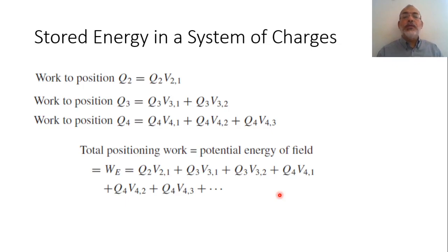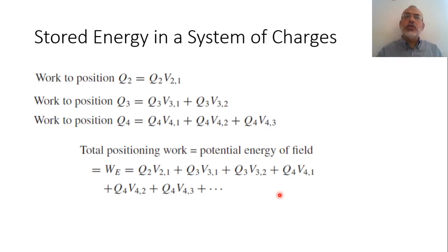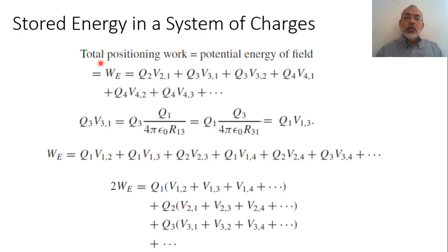The question now is: what will be the situation if we reverse the arrangement? If I start with Q4, then bring Q3, then bring Q2, and finally bring Q1, and sum all the work done, effectively this should be the same. So the total positioned work in the previous case was Q2·V21 plus Q3·V31 plus Q3·V32 and so on.